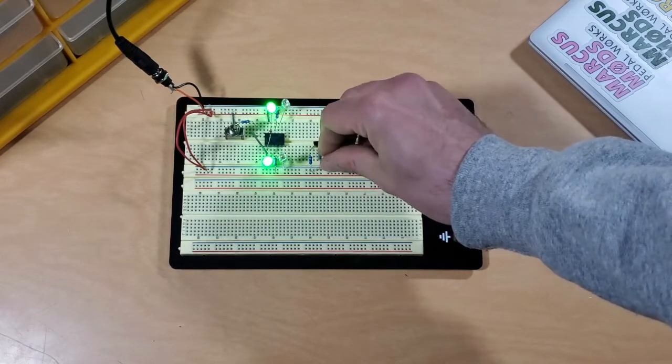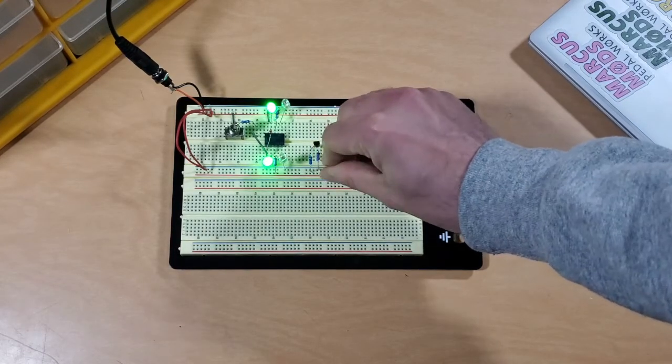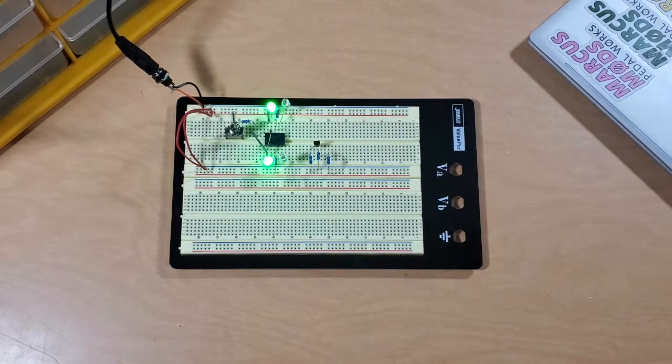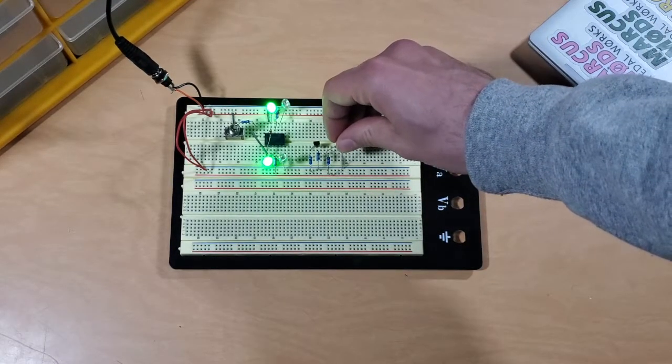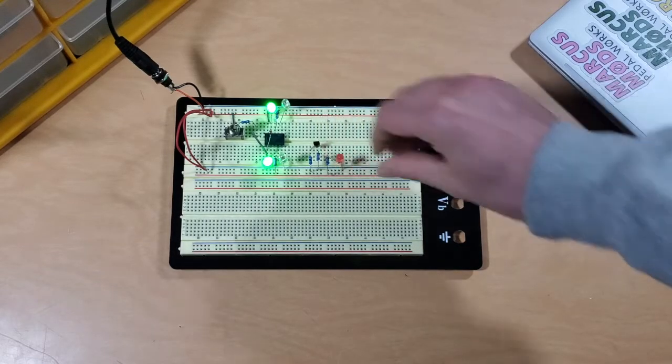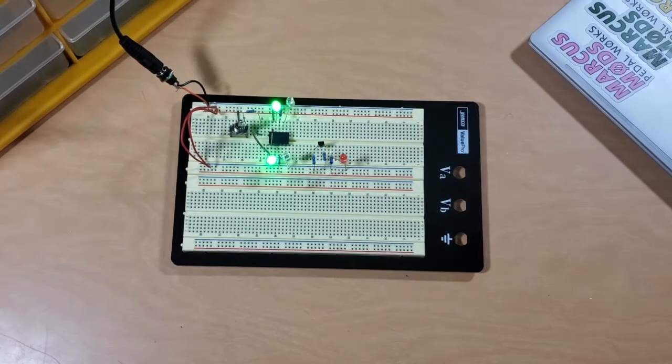Once we've got that going, we will add the LED. In this case, I'm using a red LED. We'll connect the long leg to the drain of our JFET and then the short leg, which is negative, to ground.